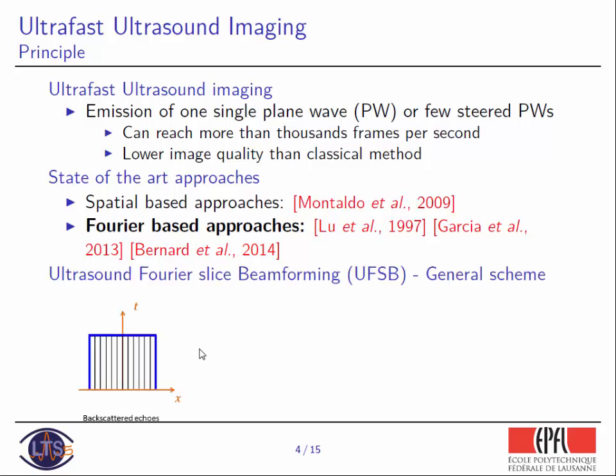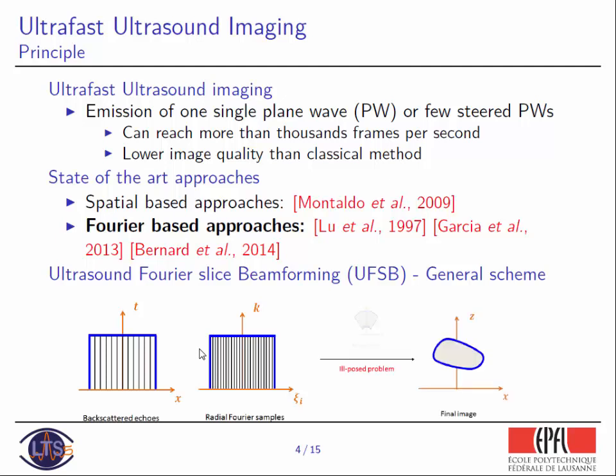It is called Ultrasound Fourier Slice Beamforming. So what is the general scheme? Let's suppose here is a picture of our image, there is a probe, and here are the different RF lines — our backscattered echo. The principle is: from this echo, we take the Fourier transform in time, then we tilt, simulating a delay at reception. We take the Fourier transform and sum. From different delays, we obtain different lines. Here is the k-space — we call these radial Fourier samples.